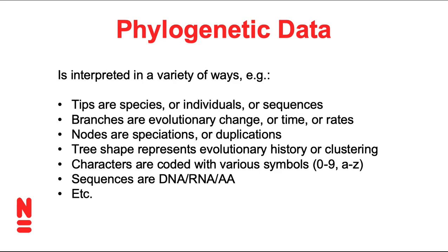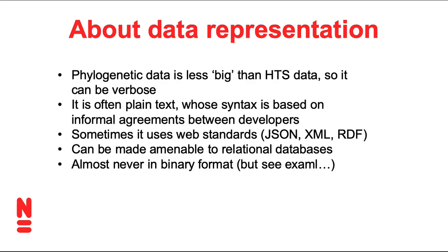One of the challenges is to get that meaning across within a particular context — how do you express that in a way that a program can do something with it? Phylogenetic data is not really big data in the sense that high-throughput sequencing data is. In high-throughput sequencing, one of the big challenges is to make the data as compact as possible. That's not really a problem for phylogenetic data, so it can afford to be more verbose — and it needs to be, because of this great variation of different interpretations depending on the context.